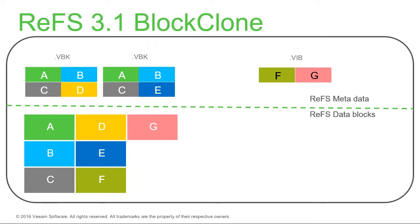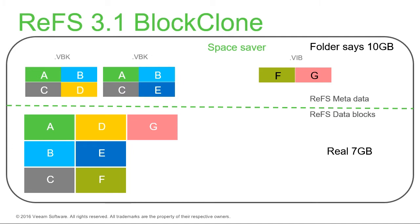That means we get a kind of deduplication — I wouldn't call it dedupe, but it's a space-saving technology using pointers. For example, if each block is one gig and we have ten blocks referenced but only seven unique data blocks, we're only using seven gigs on disk even though the file system reports ten. So we gain some space saving.